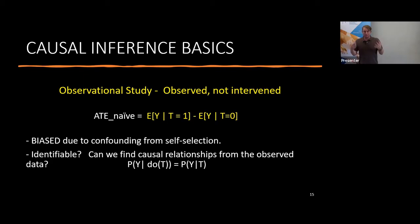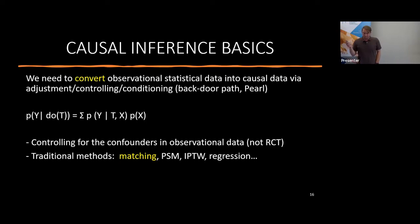Is this observed data identifiable? Can we find causal relationships from the observed data? Can the probability of Y given do(T) be obtained from the probability of Y given T? We need to convert the observational statistical data into causal data via adjustment, controlling, conditioning — what Judea Pearl calls the backdoor criterion. Essentially, we are controlling for the confounders in observational data. If we can fix X to a specific value, it no longer is a function of T.